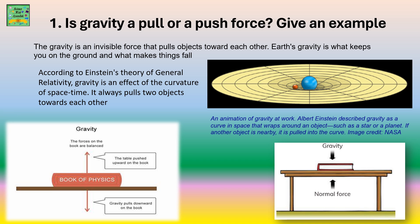Gravity is an invisible force that pulls objects towards each other, so it is a pull force. Earth's gravity is what keeps you on the ground and what makes things fall. According to Einstein's theory of general relativity, gravity is an effect of the curvature of space-time. It always pulls two objects towards each other.